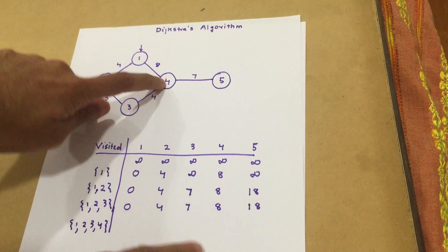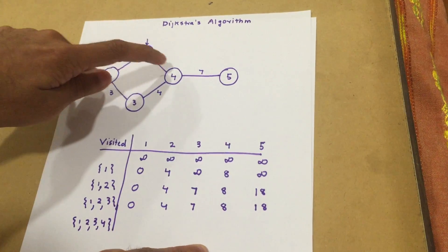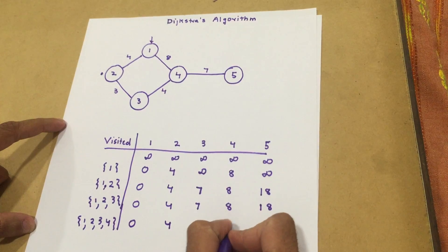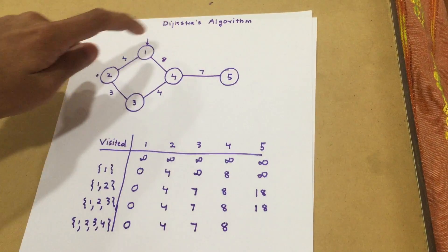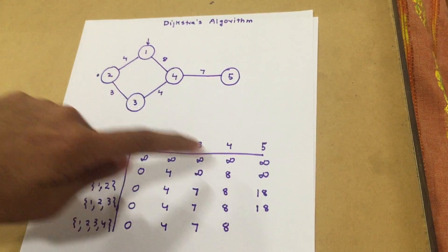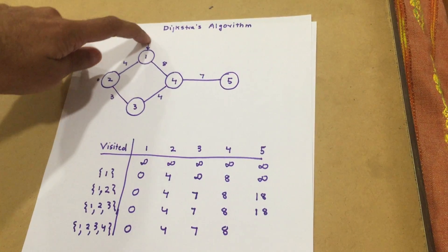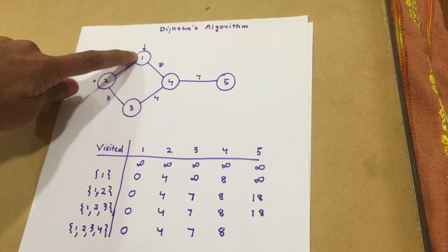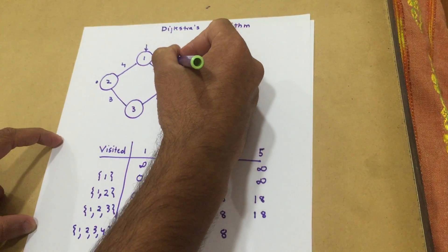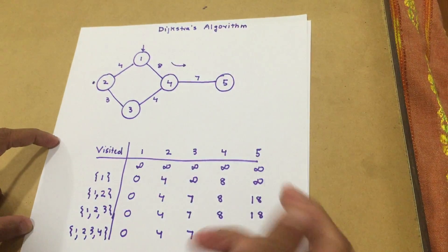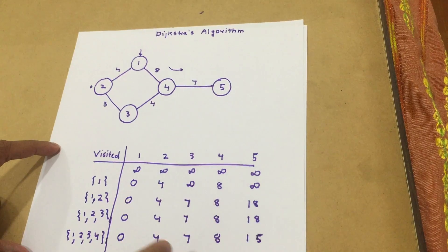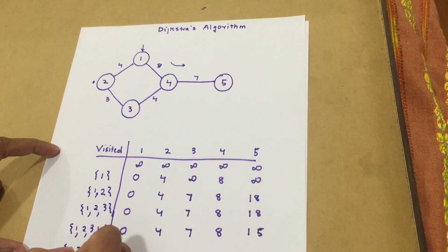Now we are on node four. Node four is connected to one, three, and five. Since one and three are already visited, we look at the distance to five. The previous distance to five was eighteen. But now going from the root node through four, the distance is eight plus seven, which equals fifteen. Since fifteen is less than eighteen, we update the distance to five to be fifteen.